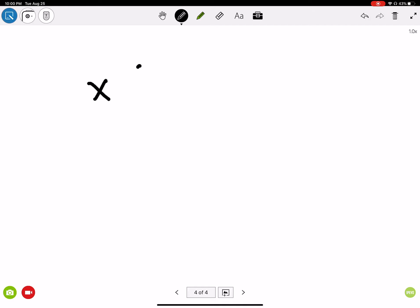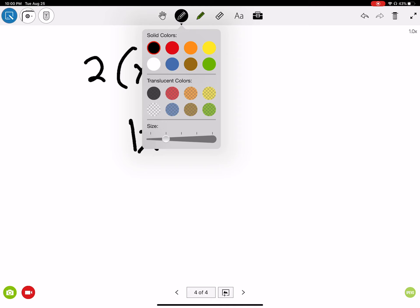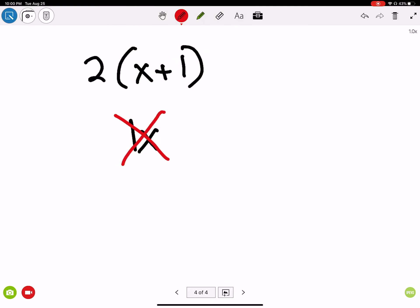If I change this so that I have 2 times x plus 1. Order of operations. What's x plus 1? Please don't say 1x, because it's not. If you tell me that x plus 1 is this, you're wrong. Why am I wrong? Because this says 1 times x. So this is not what x plus 1 is.